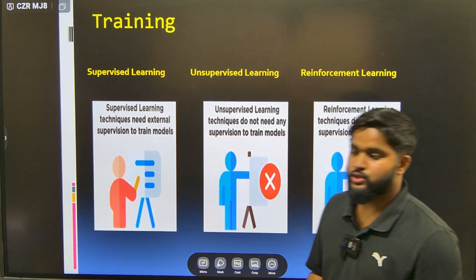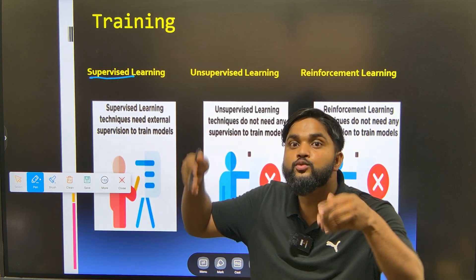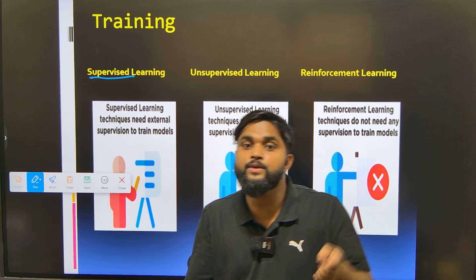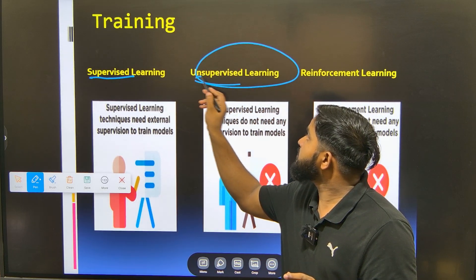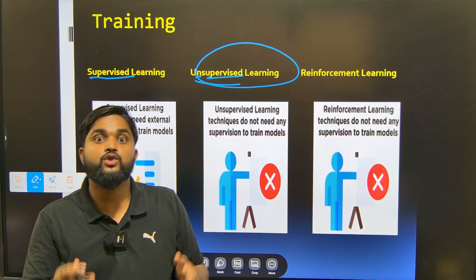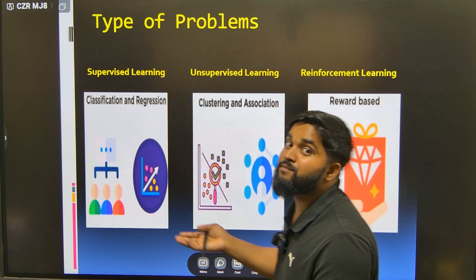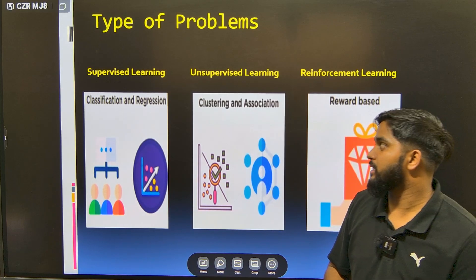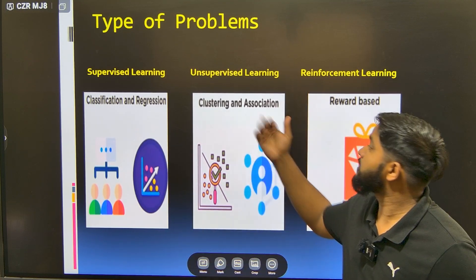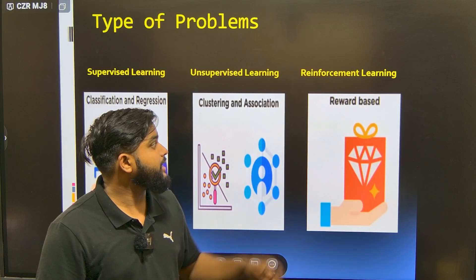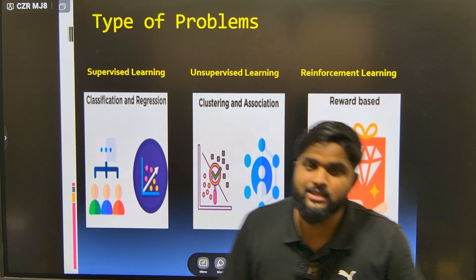Regarding training approach: supervised learning, by its name, requires supervision — there must be a supervisor to verify whether the machine is working correctly. Unsupervised learning requires no supervisor. Reinforcement learning also requires no supervision because it works on a trial-and-error approach. In terms of types of problems: supervised learning handles classification and regression, unsupervised learning handles clustering and association, and reinforcement learning handles reward-based problems.